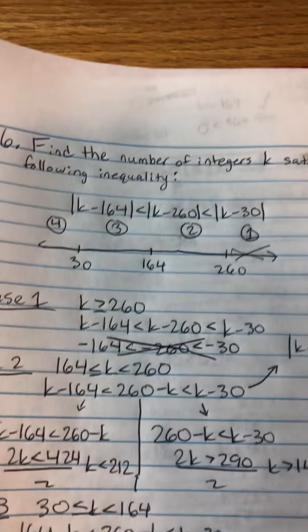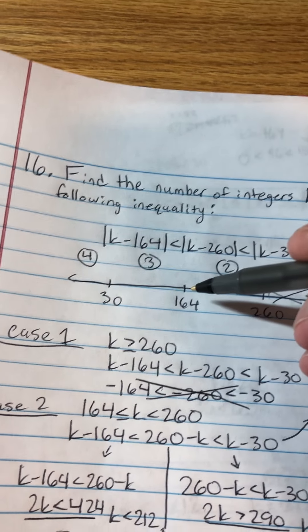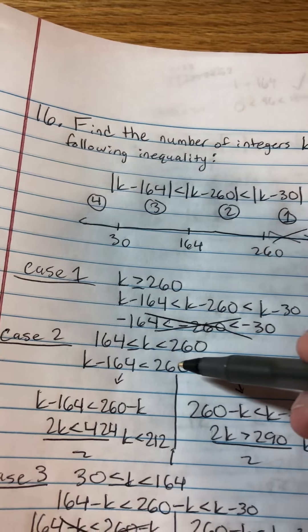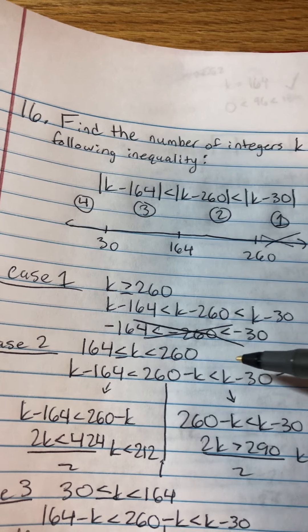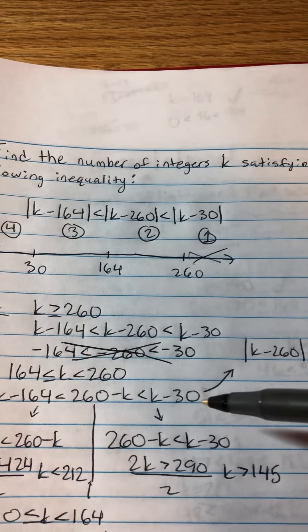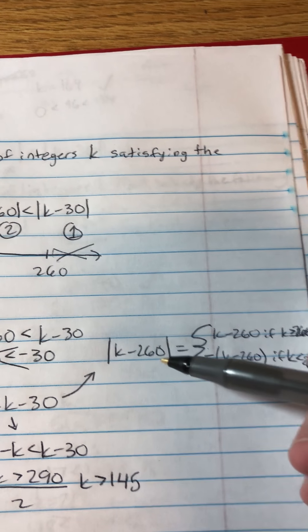Case 2 is when k is in between 164 and 260, and k can equal 164. So you would get k minus 164 is less than 260 minus k, which is less than k minus 30.